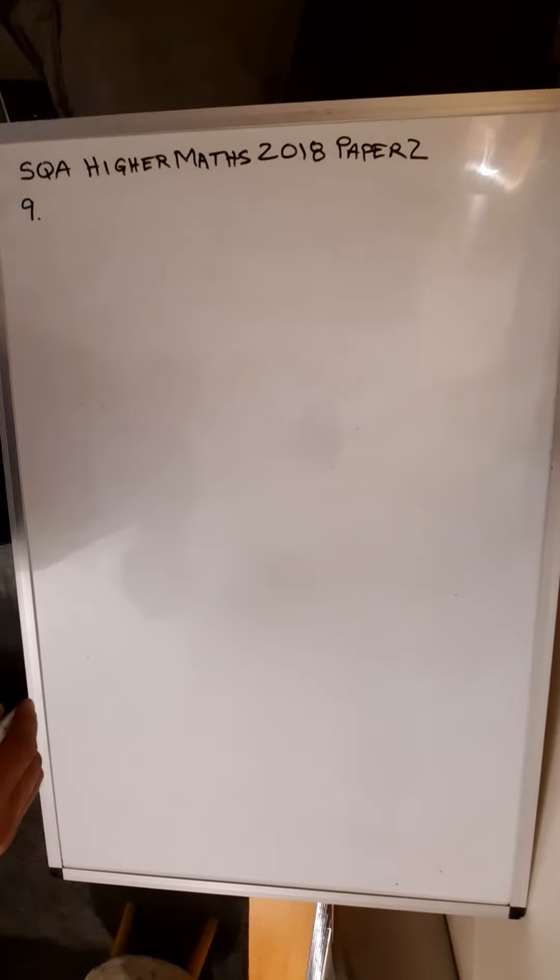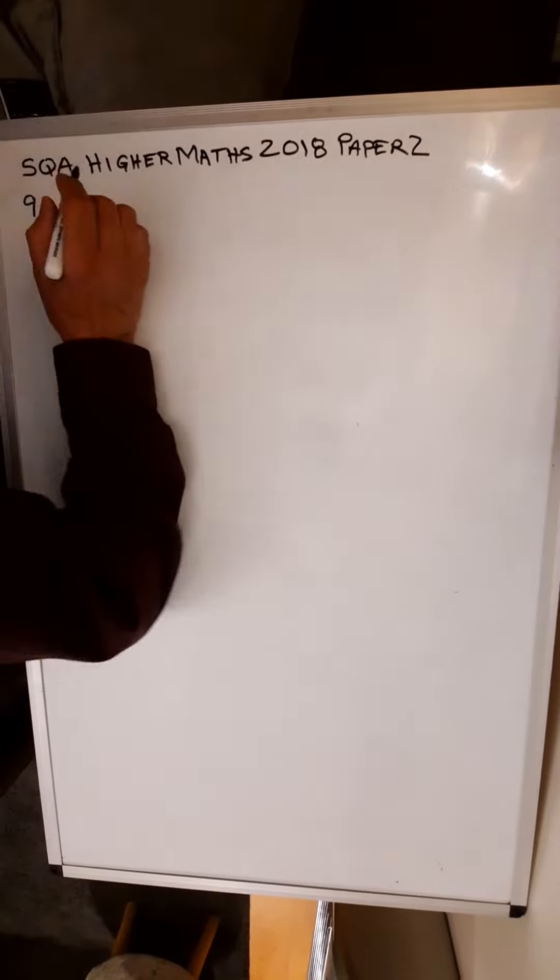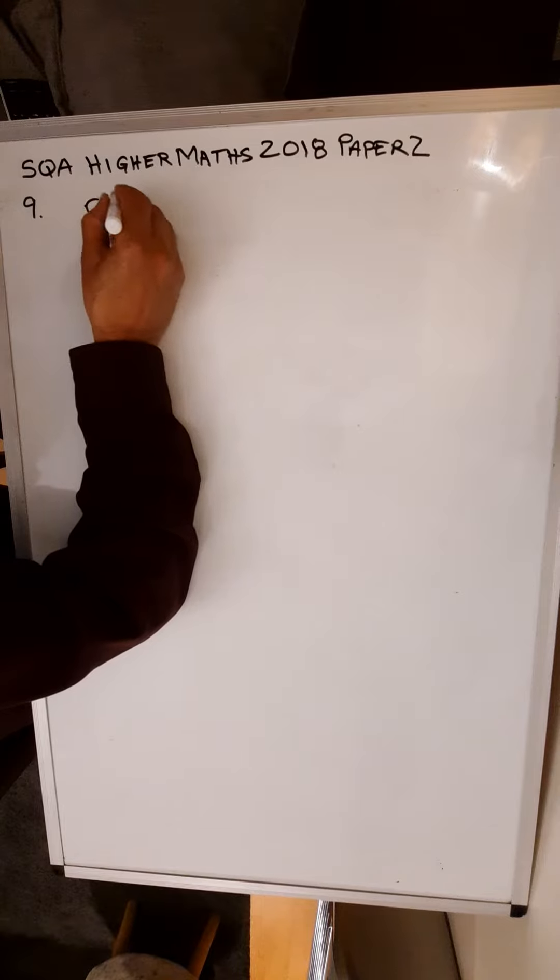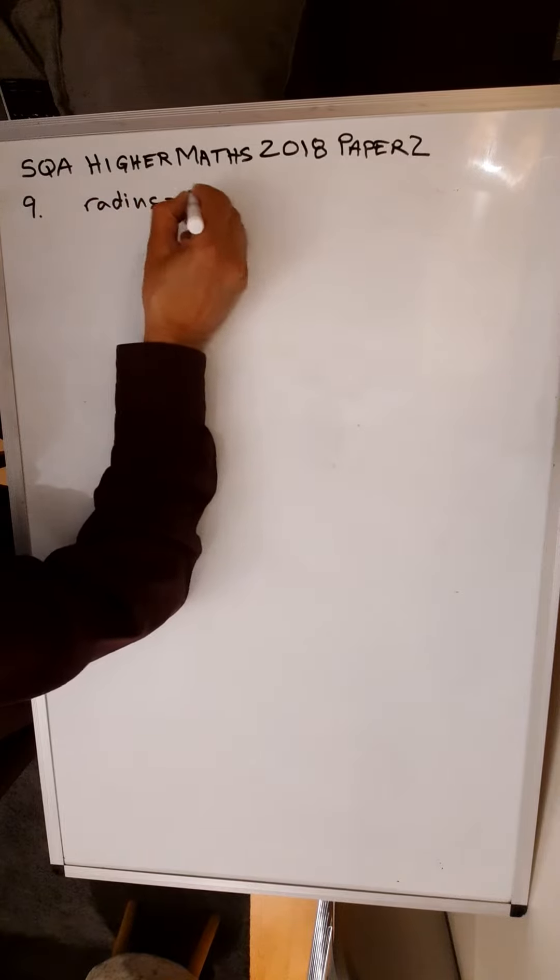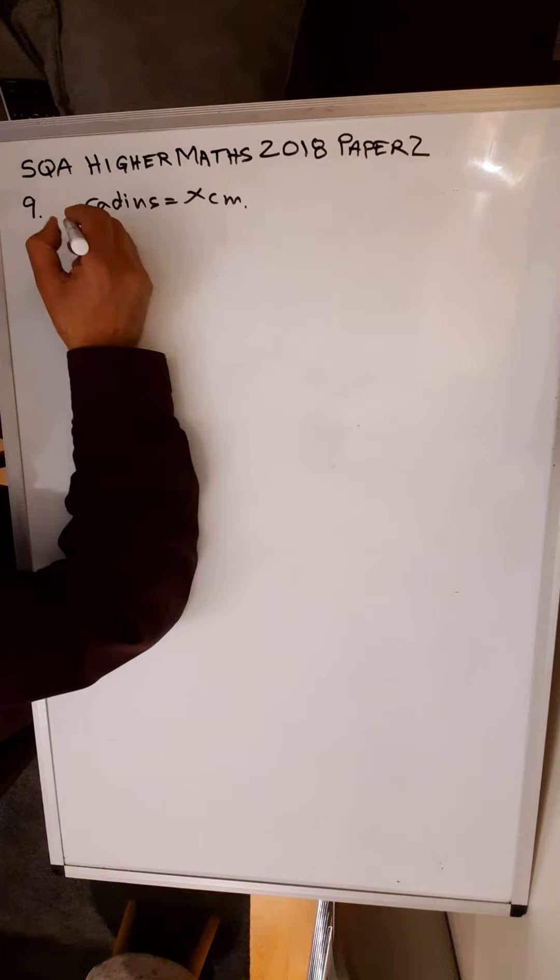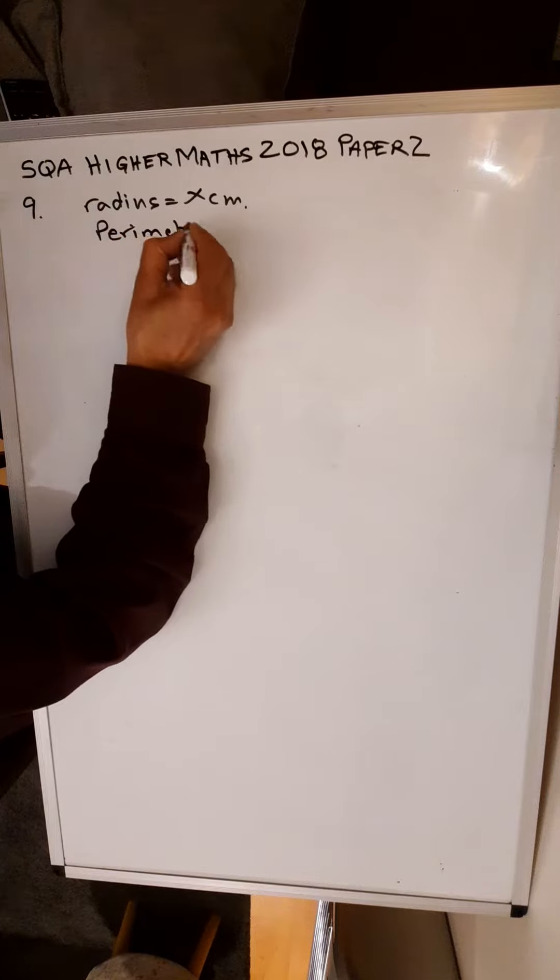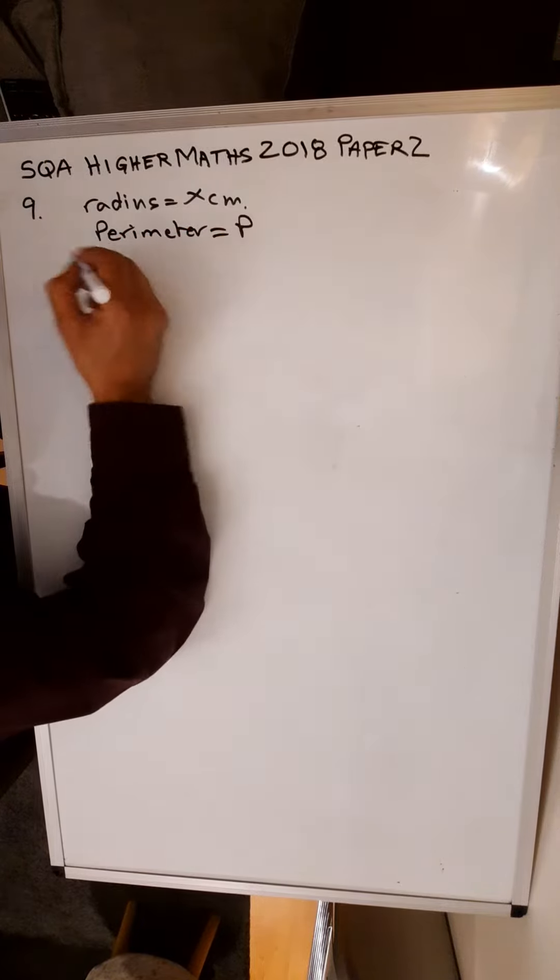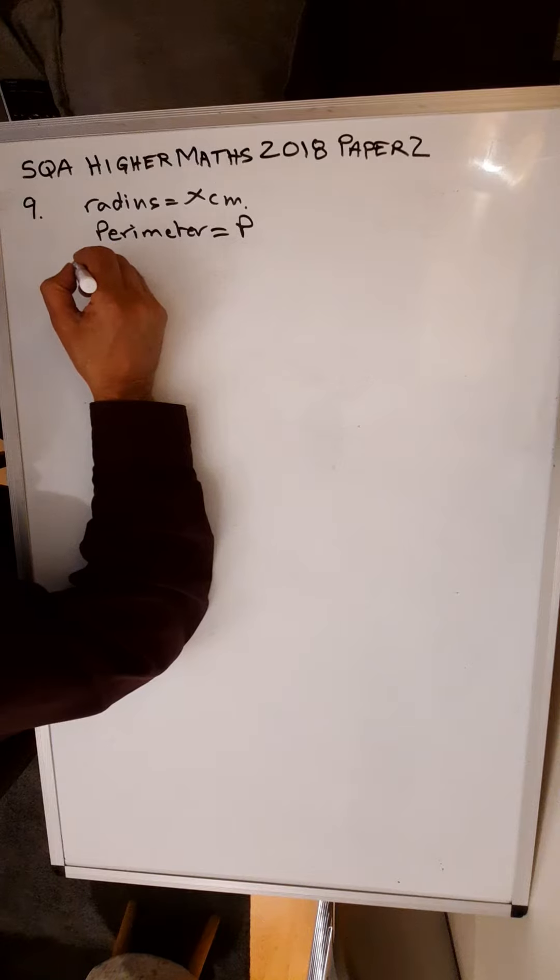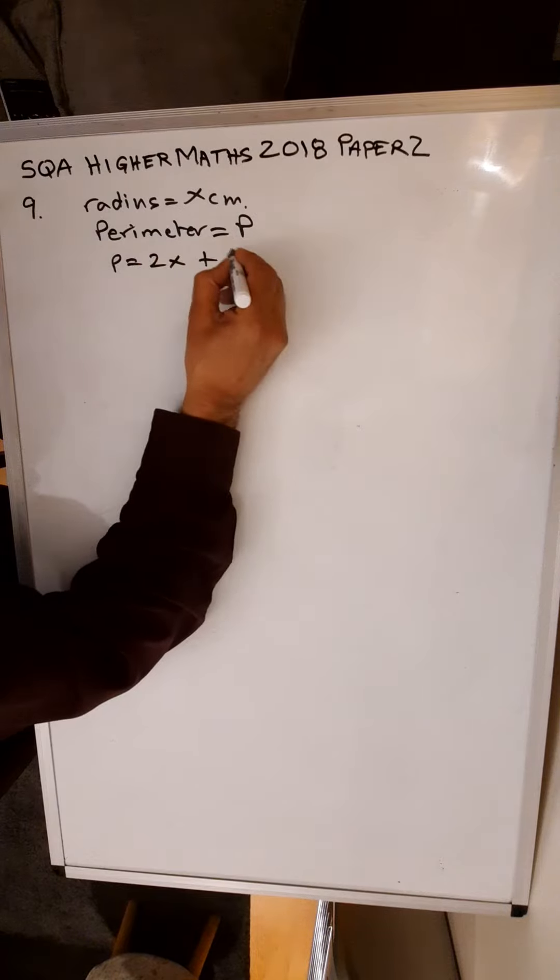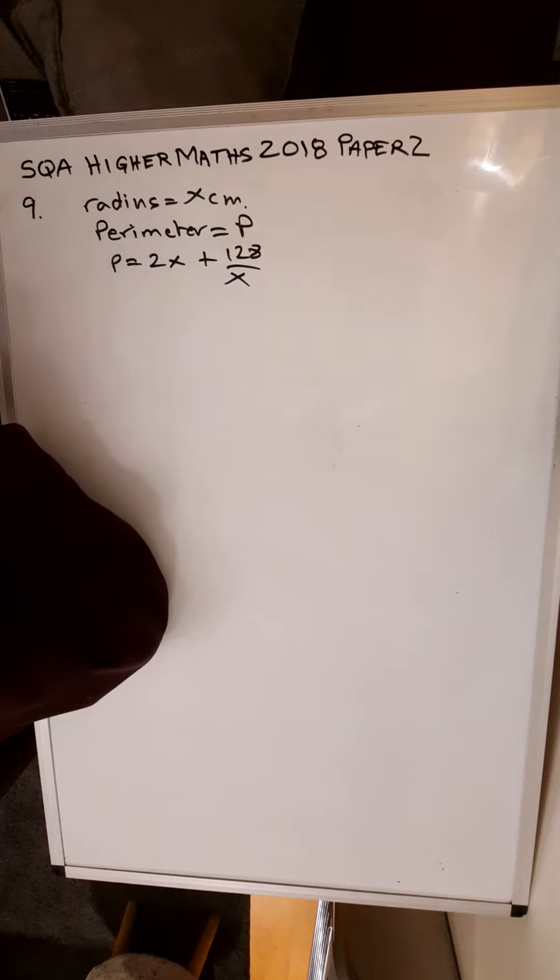SQA Higher Maths 2018 Paper 2, Question 9. A sector with a particular fixed area has radius x centimeters. The perimeter is equal to p, and parameter p is given by p equals 2x plus 128 over x. Find the minimum value of p.